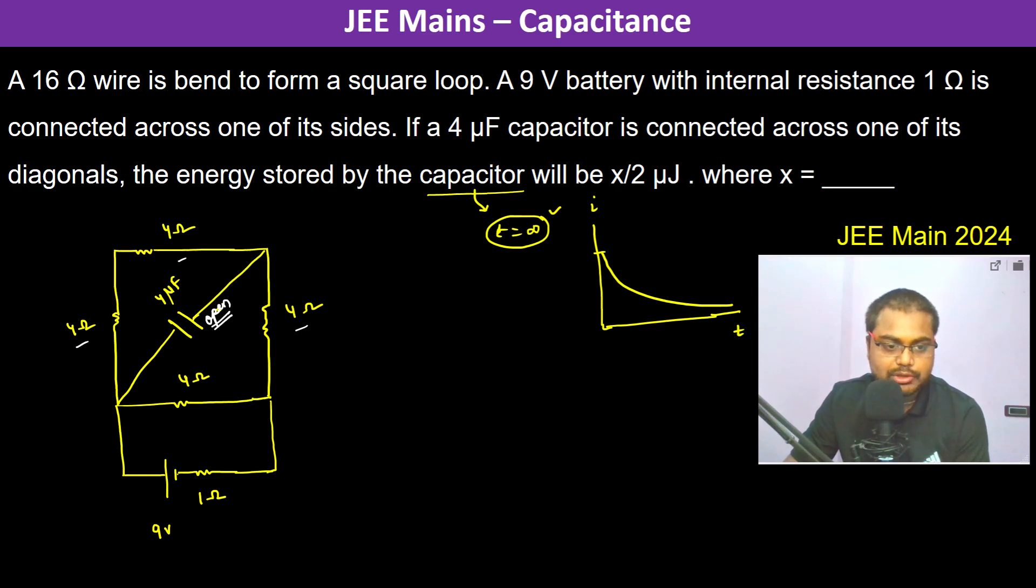Because now the current will be going and the current will be dividing like this. So the circuit reduces like this.